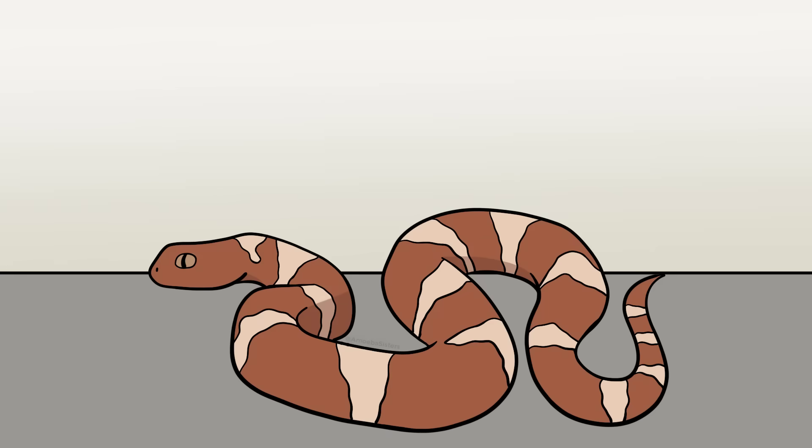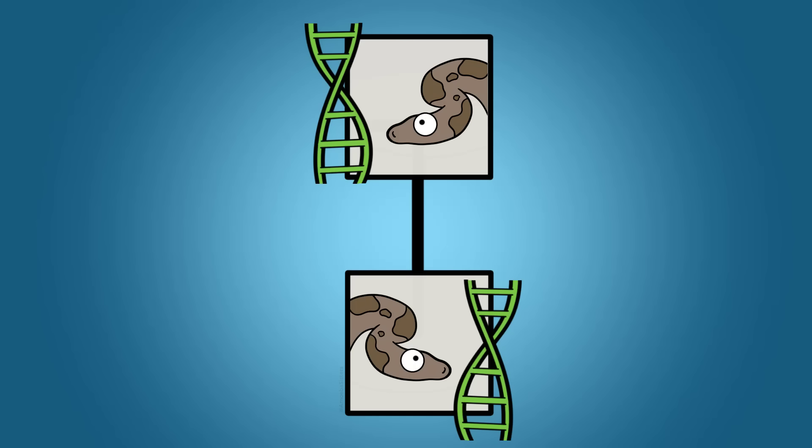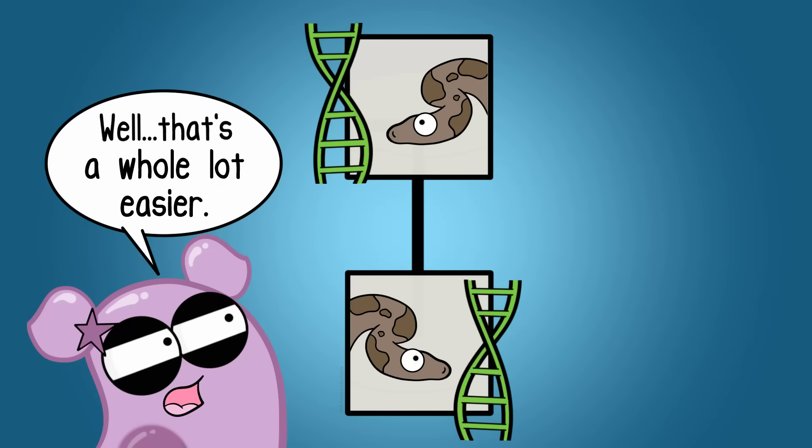One fun fact, many snake species can reproduce asexually. Had that been the case for Spike, he would have inherited all of his DNA from only one parent. But it would still be DNA coding for traits.